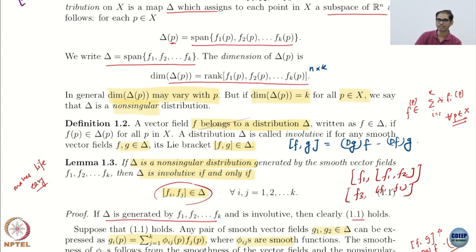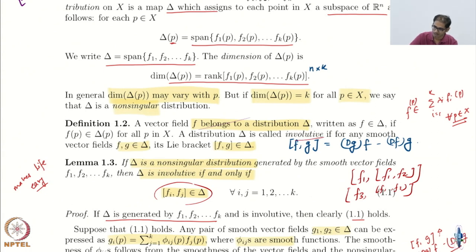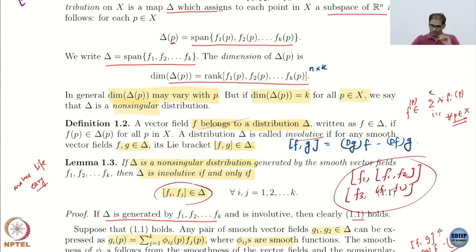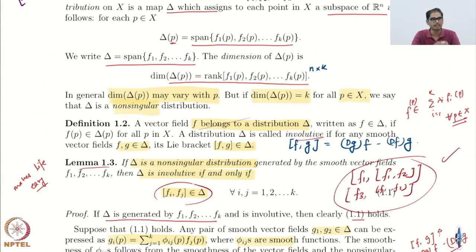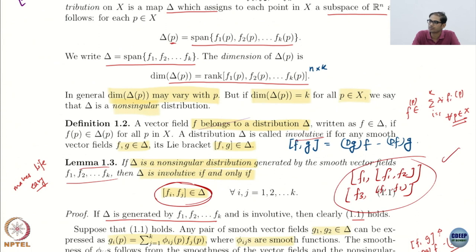Many successive Lie brackets — because every time I do a Lie bracket, I get another vector field. So going just by the definition and checking all of these would make life impossible. That is what this lemma does: it gives a very nice simple characterization. It says I do not have to check all of these successive Lie brackets — I only have to check this for every possible pairwise combination of the k vector fields.